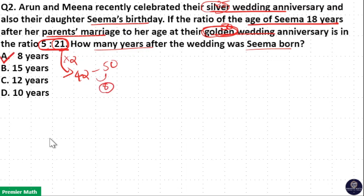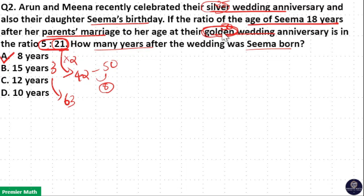Option A is your answer. If I multiply 21 by 3, it will become 63. But 63 is greater than 50, which is not possible. So option A is your answer.